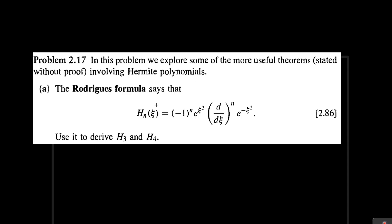In this problem, we're going to be investigating some of the mathematical properties of the Hermite polynomials. So this isn't exactly a physics problem, this is more of a math problem. But it's always useful to get a bit more familiar with some of the mathematical tools that we're using. So in part a, we're going to find H3 and H4 using this formula.